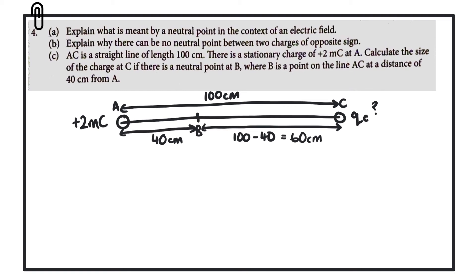From the previous parts, we know the charge at C must be positive, because a neutral point only exists between two charges of the same type, and the charge at A is positive. Since B is a neutral point, the resultant electric field strength there is zero, meaning the electric field strength due to A at that point equals the electric field strength due to C at that point.